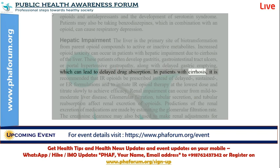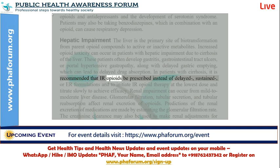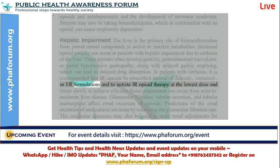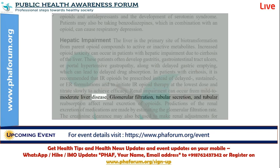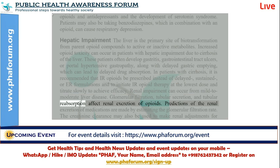In patients with cirrhosis, it is recommended that IR opioids be prescribed instead of delayed, sustained, or ER formulations, and to initiate IR opioid therapy at the lowest dose and titrate slowly to achieve efficacy. Renal impairment can occur from mild to moderate liver disease. Glomerular filtration, tubular secretion, and tubular absorption affect renal excretion of opioids.